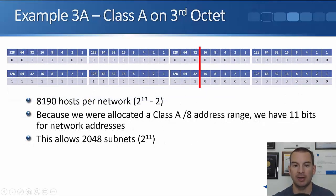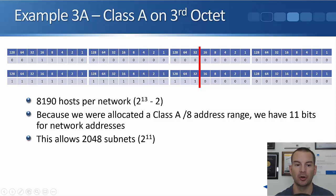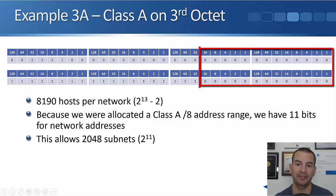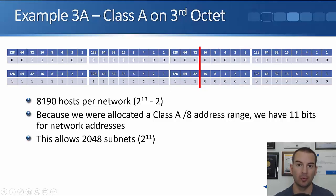Slash 19 — the line is going to be after three bits on the third octet. That leaves us 13 bits for hosts: eight in the last octet and then five on the right-hand side of the third octet. To figure out how many hosts each network is going to support, it's two to the power of 13 minus two.